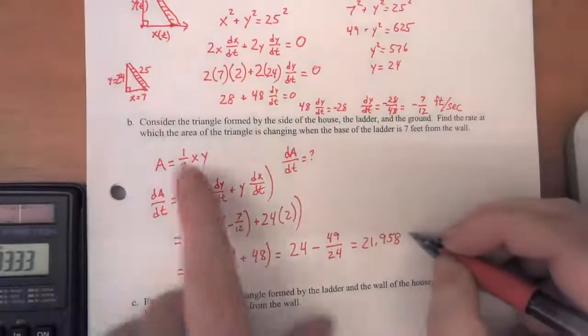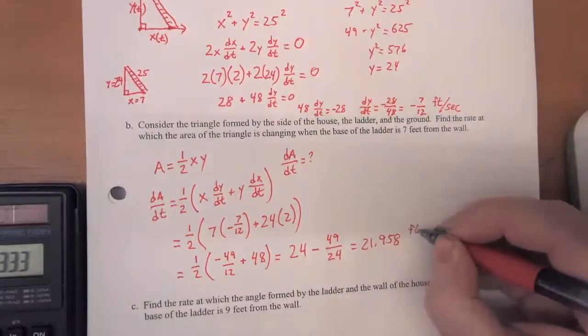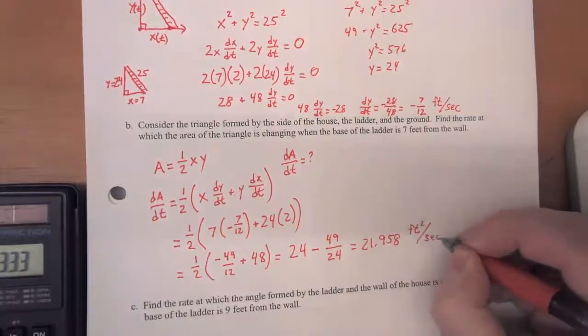So at this moment in time, the area of this triangle is instantaneously changing at a rate of 21.958 square feet per second.